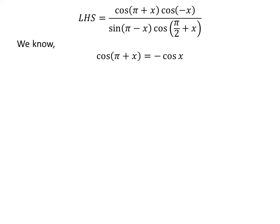We know cosine of pi plus x is equal to minus cosine of x. We also know cosine of minus x is equal to cosine of x. The proofs of these trigonometric identities are given in the video appearing in the upper right corner, and the links are also given in the description section.